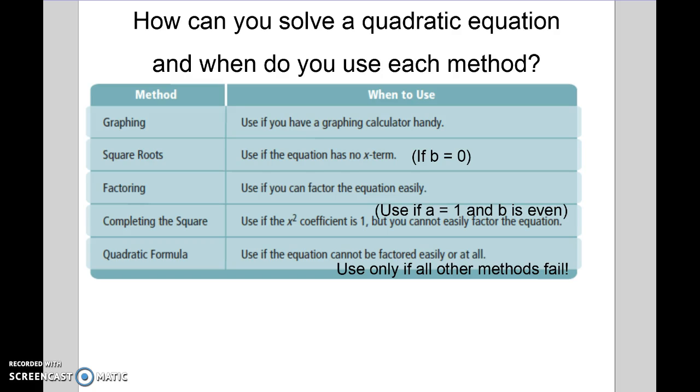Square roots, you're going to use if you have no b, no x term. Factoring is going to be the one that you'll probably use the most, especially if you can factor it easily. Completing the square, you will also use pretty often, but you don't want to use completing the square if you can't easily get a to 1 and if the b is not even.